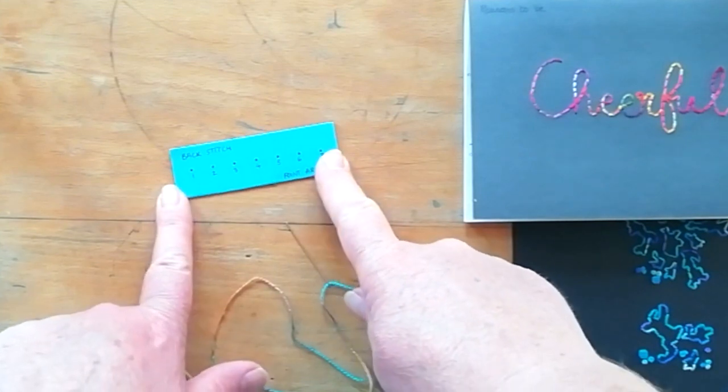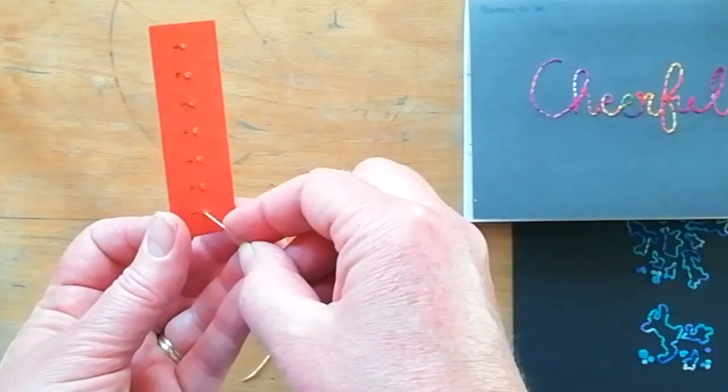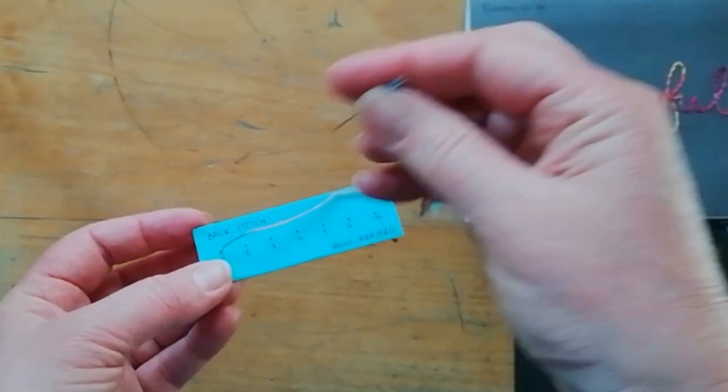Now we're going to have a look at backstitch. I have another piece of card and we're going to start in exactly the same way as the running stitch.